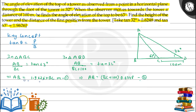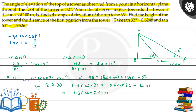Now from equation 1 and equation 2, we can equate AB: 1.9626 × BC = 0.6248 × BC + 62.48. Bringing BC terms to one side: (1.9626 − 0.6248) × BC = 62.48, which gives 1.3378 × BC = 62.48.